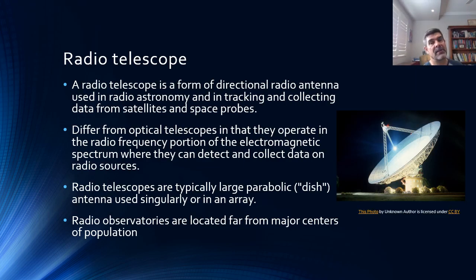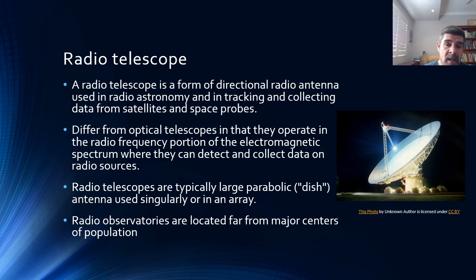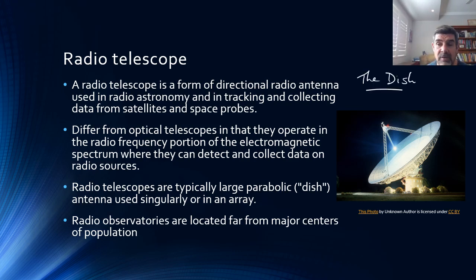Both optical telescope types operate in the visible component of the electromagnetic spectrum. Radio telescopes, however, are a different type — they operate in the radio wave component of the electromagnetic spectrum, which is much lower energy and longer wavelengths. These are directional radio telescopes. If you've seen the movie 'The Dish,' you'll know they need to keep being moved; if they don't move and track the object, such as what they were doing with Apollo 11, they lose it.